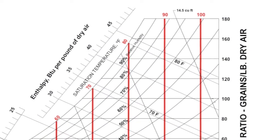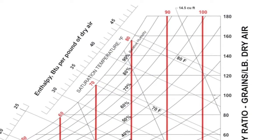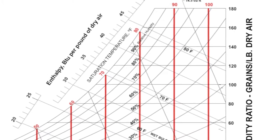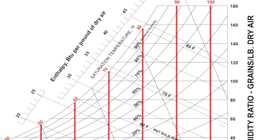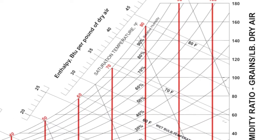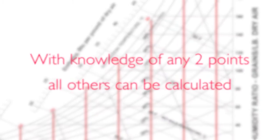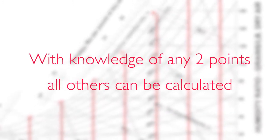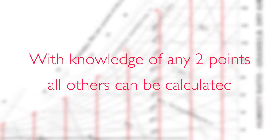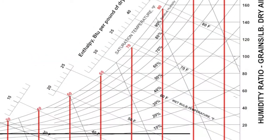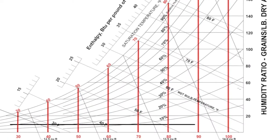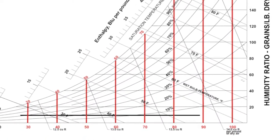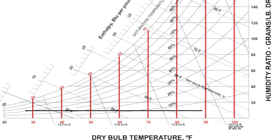The psychrometric chart displays the properties of air. Knowing how to read it is fundamental to determining the elements required to change those properties. With knowledge of any two points, all others can be calculated. In this video, the first of a series brought to you by Bry Air, we'll define the terms related to the chart.